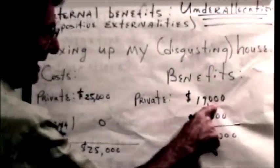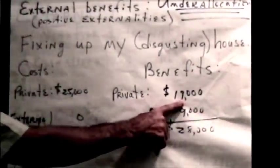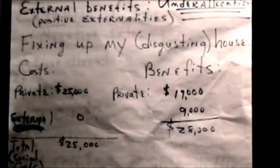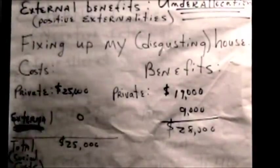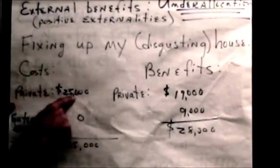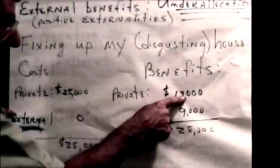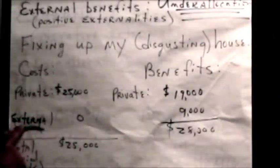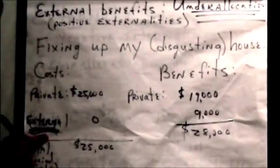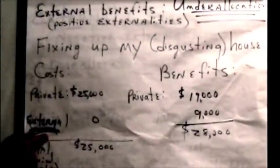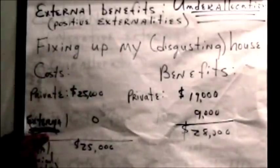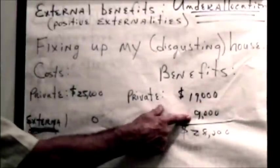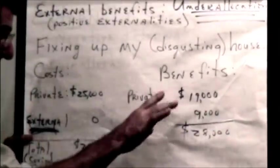But if we look at the benefits, my benefit from fixing up my house was $19,000. My house value would increase $19,000. So, I didn't do it and I wouldn't do it because my marginal cost was $25,000 and my marginal benefit was $19,000. But from the social point of view, there were external benefits to my fixing up my house. My neighbors would live better. Their houses would be worth more. It would be easier to sell their house because they weren't living in a neighborhood that had such a rundown house. And so, the benefits to all of my neighbors, the external benefits, the ones that don't apply to me at all, are $9,000.